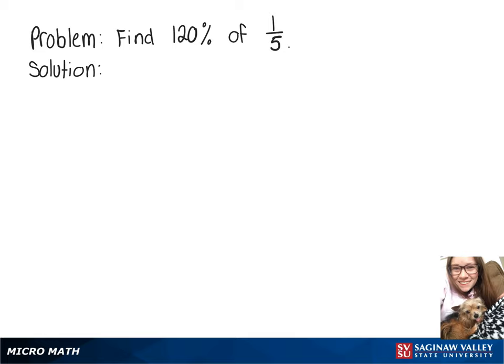We're going to find 120% of 1/5. Writing that percent as a fraction, we'll have 120 over 100 and multiply that by 1/5. 120 times 1 is 120, and 100 times 5 is 500.